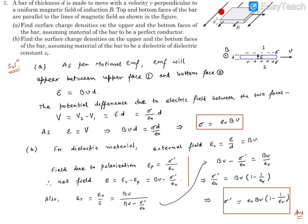Top and bottom faces of the bar are parallel to the lines of magnetic field as shown in this figure. This is the bar moving in this direction, and this is the thickness d. This is a three-dimensional figure that I've drawn in two dimensions. If you're looking from the front, you'll see the thickness d and velocity v in this direction. The magnetic field appears perpendicular to the screen outwards.